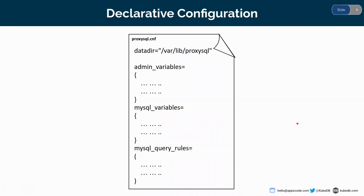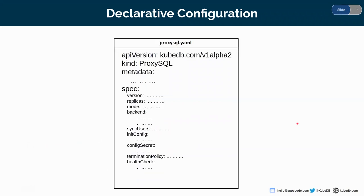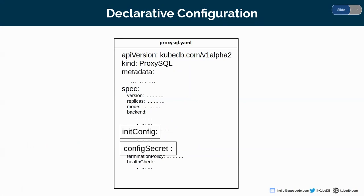To actually execute this whole concept, we have introduced two new fields in the KubeDB ProxySQL API: one is the initConfig and another one is the configSecret. We would see what are in the initConfig and the configSecret.